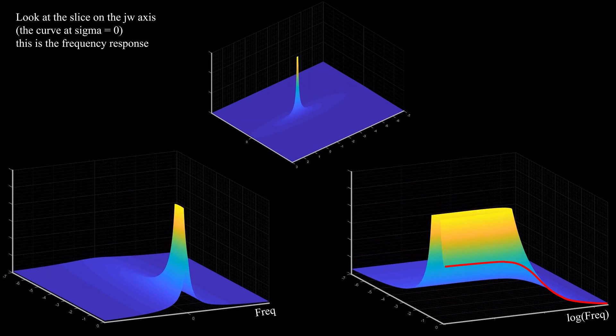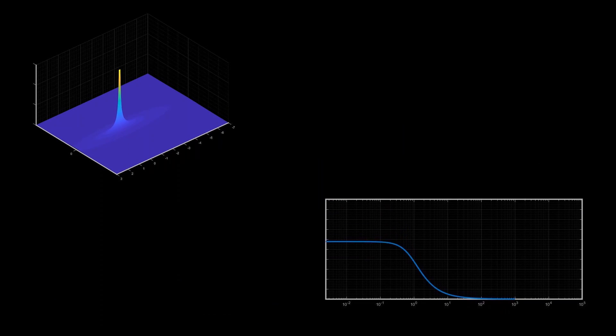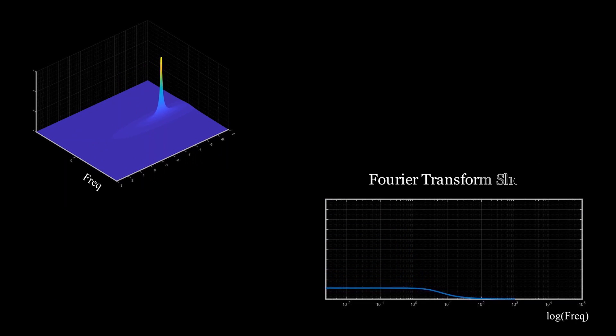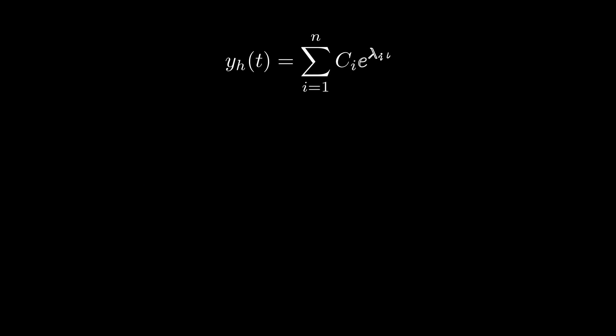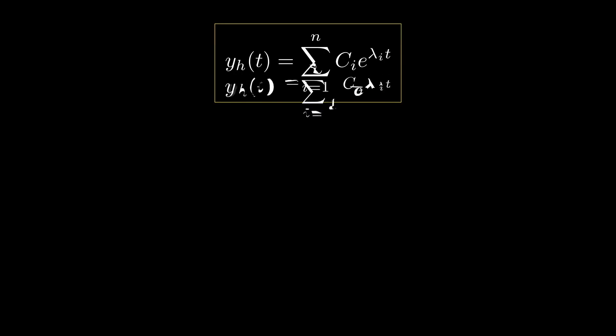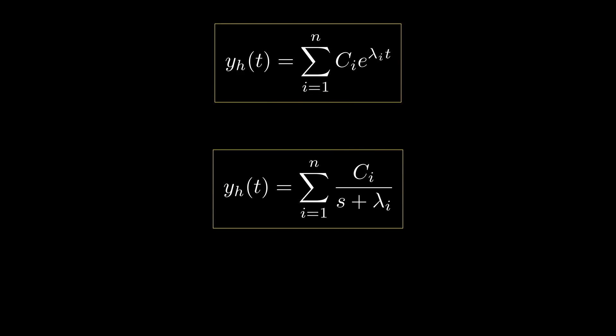This is the main idea behind Bode plots. The farther the distance between the pole and the origin, the higher the 3dB frequency and hence the wider the bandwidth. After the 3dB frequency, the frequency response decays with a fixed slope of minus 20dB per decade. So the response of any LTI system — or the solution of the LTI differential equation — is a linear combination of weighted exponentials, and hence a linear combination of shifted rational functions in the S domain.